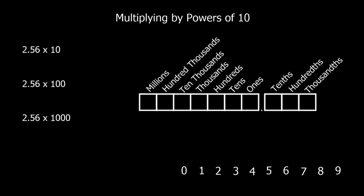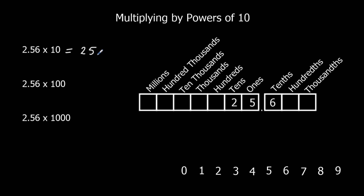Now we've got the same questions but with decimals. We start with 2.56 — 2 in the ones, 5 tenths, and 6 hundredths. We're going to do 2.56 × 10. Every time we multiply by 10, we move the digits up to the next column: the ones move into the tens, the tenths move into the ones, and the hundredths move into the tenths. So the answer is 25.6.